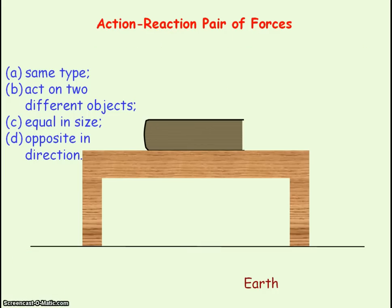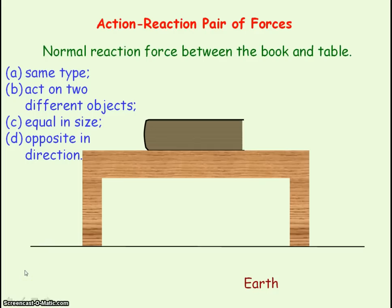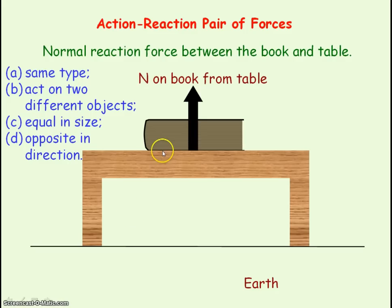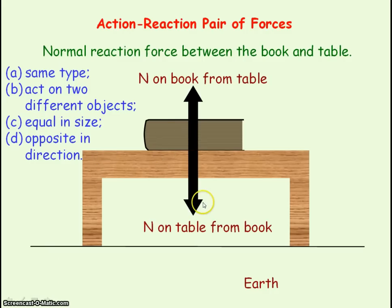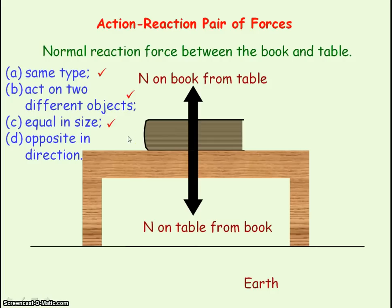The second action-reaction pair acting on the book is the normal reaction force between the book and the table. The table exerts a normal reaction force on the book vertically upwards, and the book exerts a normal reaction force on the table. These two forces are of the same type — both normal reaction forces — acting on two different objects: one on the book and one on the table. They are equal in size and opposite in direction, obeying all four rules for Newton's Third Law action-reaction pairs.